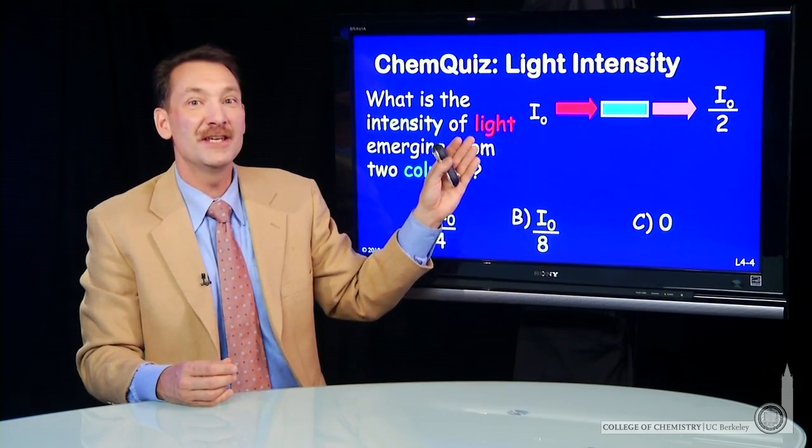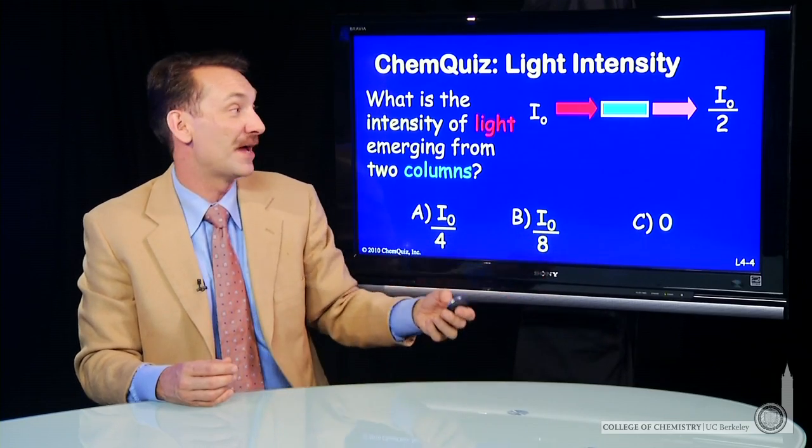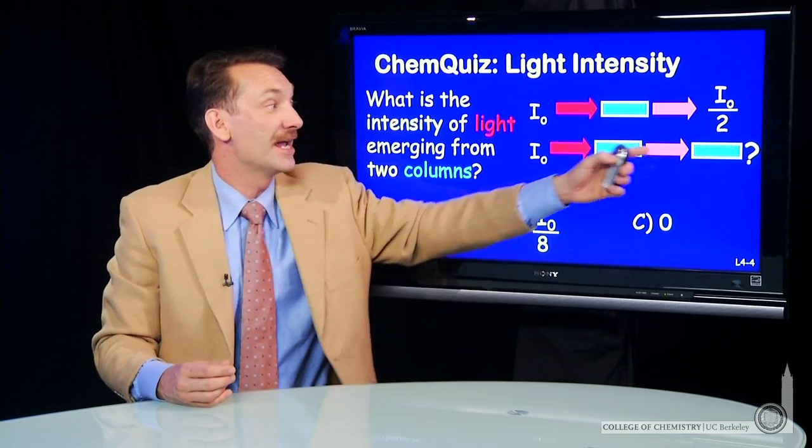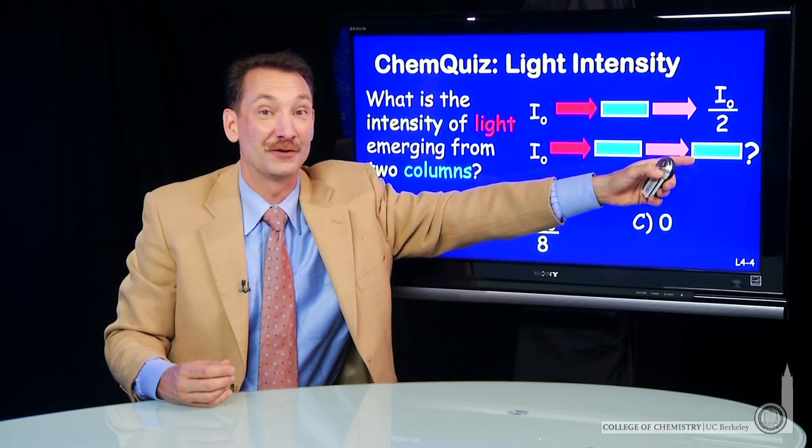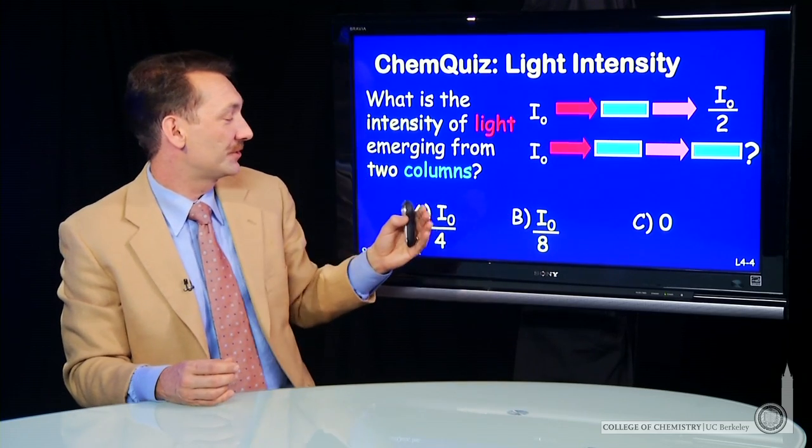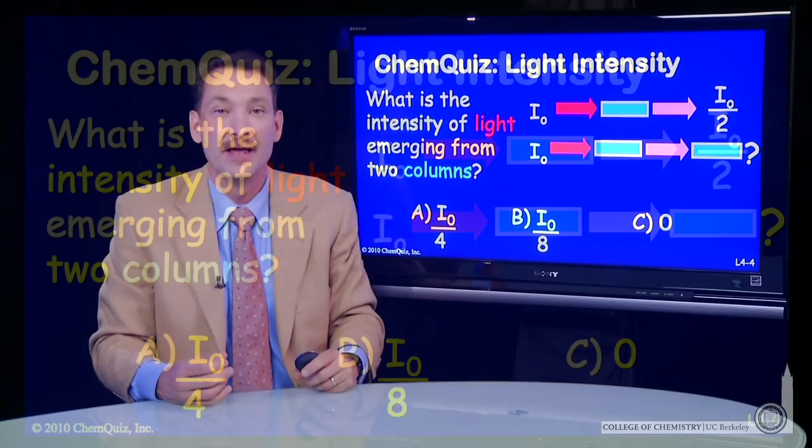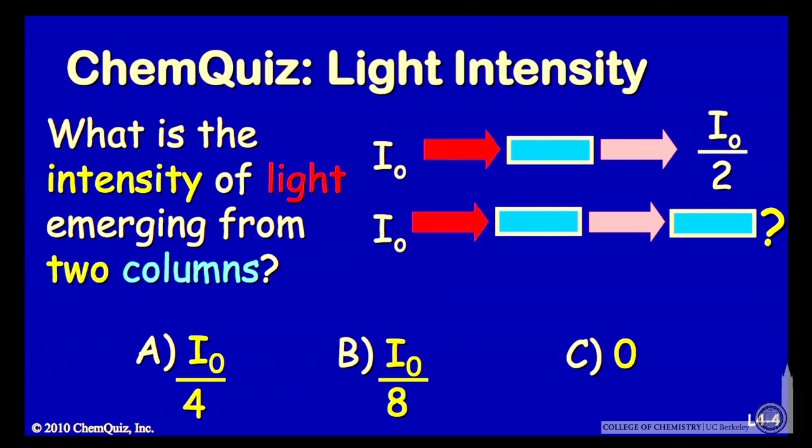What would the intensity be if you put an additional column in the path? So I₀ going through a pair of identical filters. Would that reduce the intensity down to 1/4, 1/8, or zero of the original intensity? Think about that for a minute and make a selection.